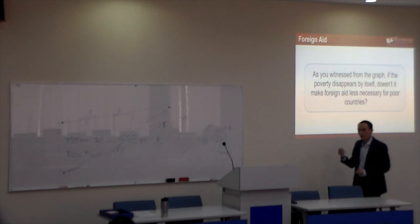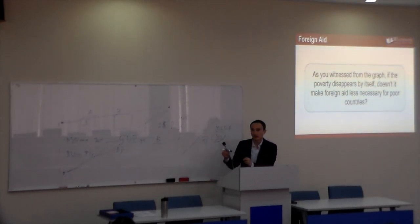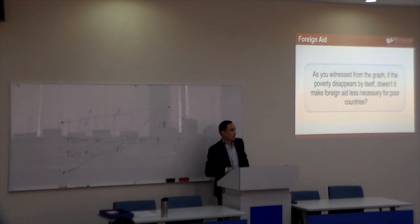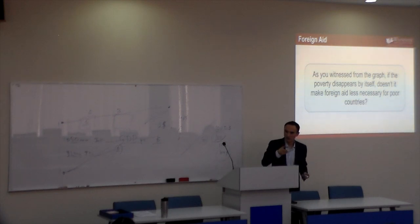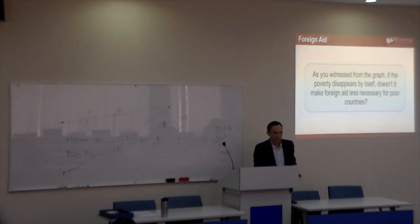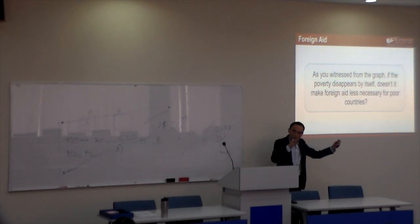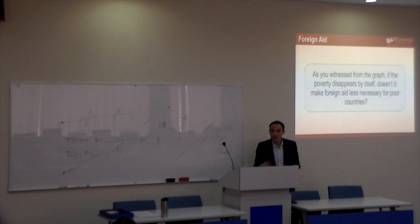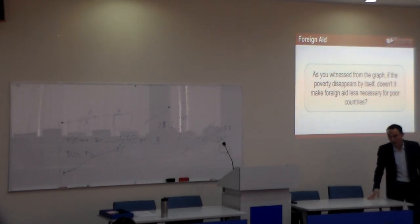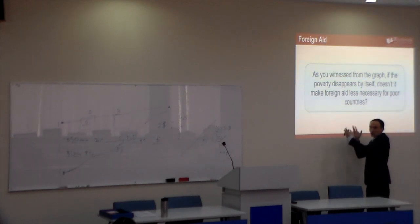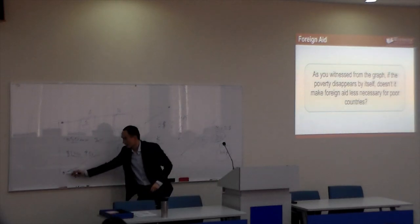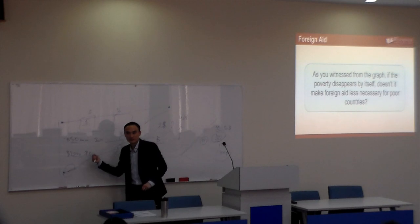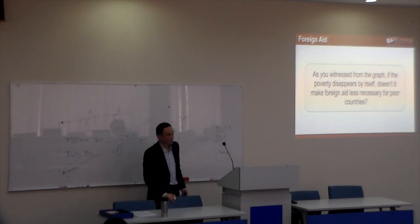What about foreign aid? We have the United Nations and other NGOs encouraging rich developed countries to contribute to help poor countries. Some argue that if absolute convergence is true, poverty will disappear by itself in the long run, so foreign aid is wasting money. But that is not correct — even if convergence is true, giving foreign aid today will make it easier for people to avoid poverty levels in the early years. So foreign aid is still needed.